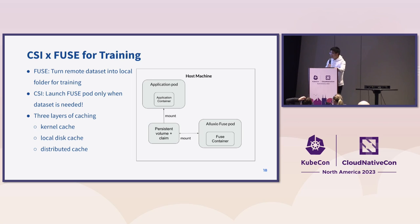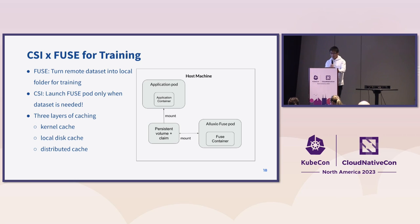With this, we have three layers of caching: FUSE kernel cache, FUSE local disk cache, and distributed cache — similar to L1, L2, and L3 cache layers. Kernel cache is faster than local cache, which is faster than distributed cache, which is faster than remote storage. But the space also grows correspondingly: there is more stored data in distributed cache than local cache than kernel cache.